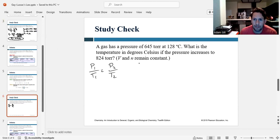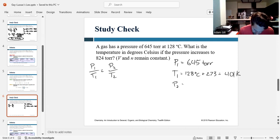So let's write down what we know. The initial pressure is 645 torr. The initial temperature is 128 Celsius. Let's convert that to Kelvin. So 128 plus 273, we get 401 Kelvin. And the final pressure is 824 torr. And the final temperature is what we are looking for.